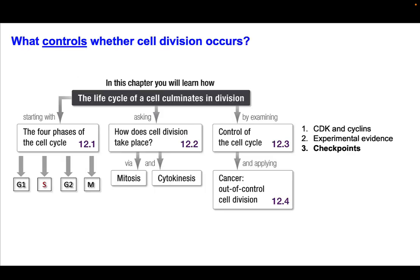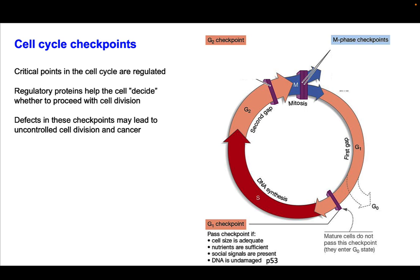Now that we've talked about how CDKs and cyclins work and the experimental evidence behind it, we're going to transition to checkpoints and their relationship to the development of cancer. Critical points in the cell cycle are regulated, and regulatory proteins help the cell decide whether or not to proceed with cell division. Defects in these checkpoint pathways can lead to uncontrolled cell division and cancer. There are four checkpoints you should be able to recall, along with what happens at each stage.